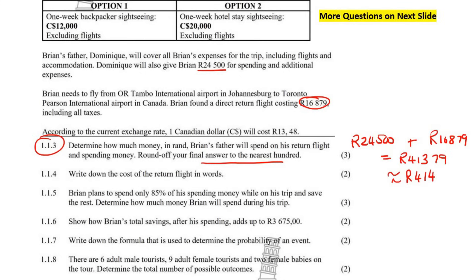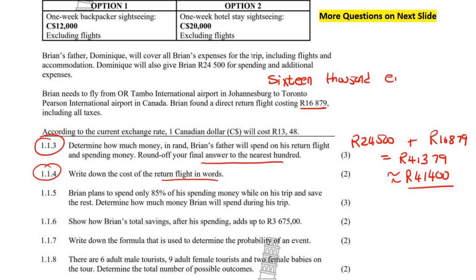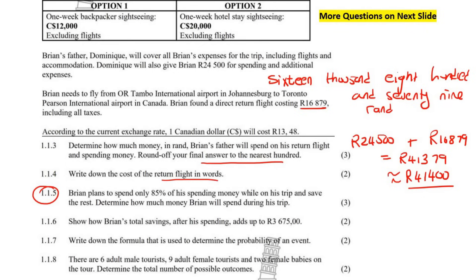The next part says: write down the cost of the return flight in words. The return flight costs 16,879 Rand, so in words that is: sixteen thousand eight hundred and seventy-nine Rand.